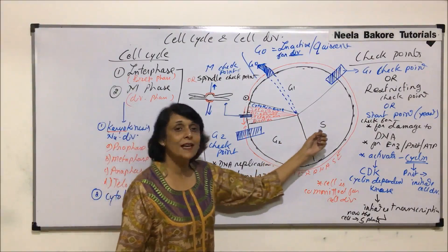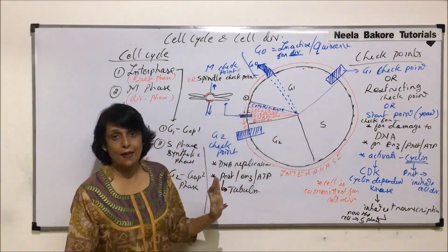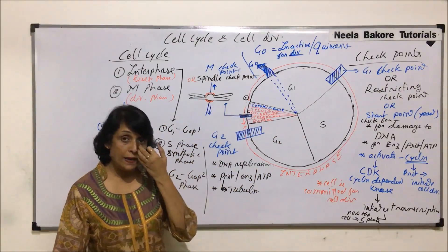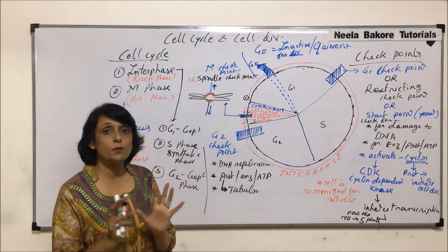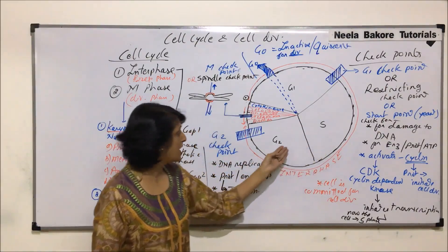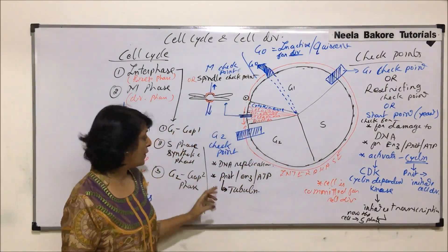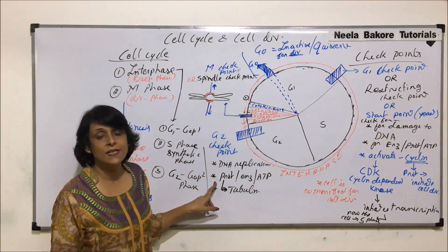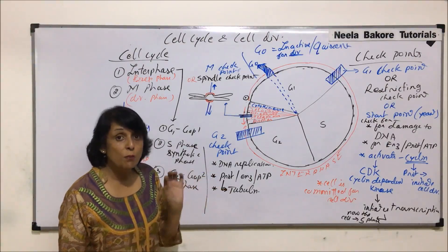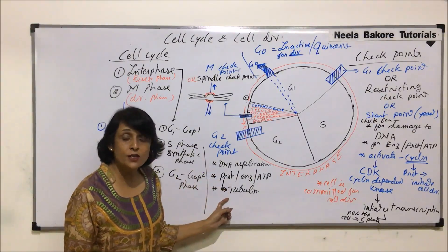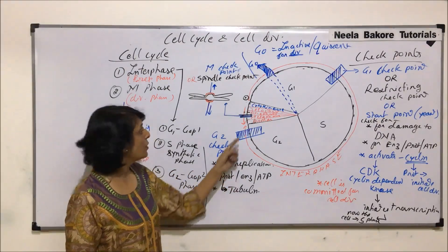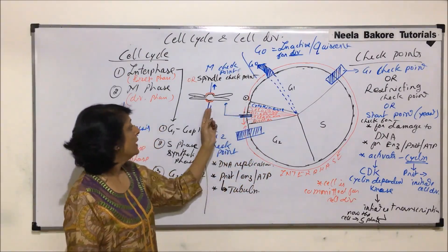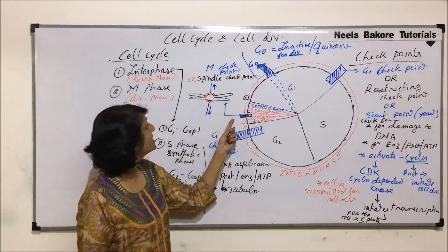Once committed, the cell will enter S, G2, and M phase. The second checkpoint, G2 checkpoint, is at the end of G2. It checks two things: what happened in S phase and what happened in G2 phase — specifically whether DNA replication was properly done, and whether all proteins, enzymes, and ATP are properly synthesized. The most important protein checked is tubulin, because it will be required for spindle fiber formation when the cell divides.